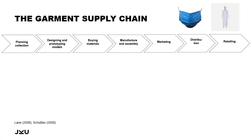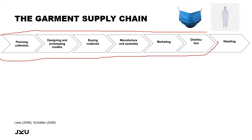The garment supply chain, in contrast, has even more steps and is even more fine-grained in its global division of labor. Traditionally, companies would control all the steps of the supply chain: planning the collection, designing and prototyping models, buying materials, manufacturing them, marketing and distributing them — with only the retailing part missing. Even historically, the manufacturing part was already outsourced — not globally, but to families that would help in the sewing process in their homes. So this part was always a kind of precarious part of the supply chain.